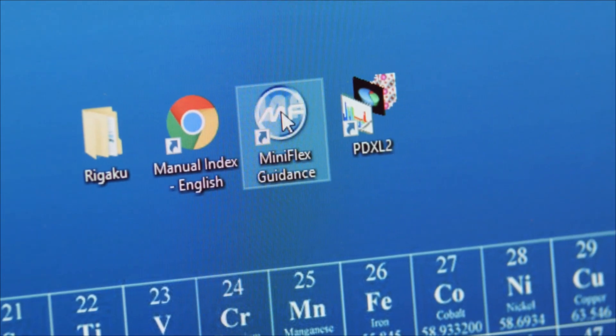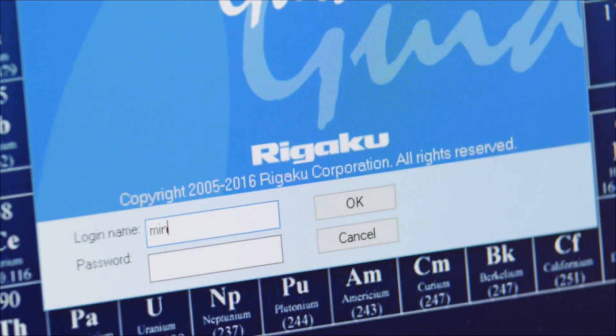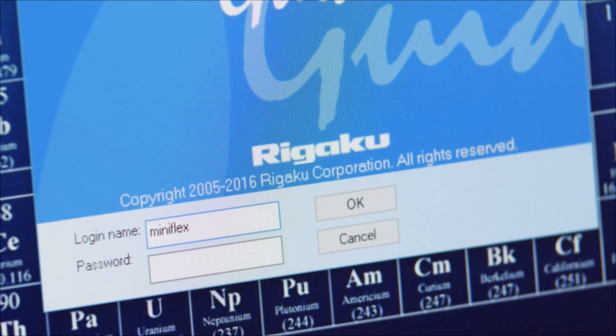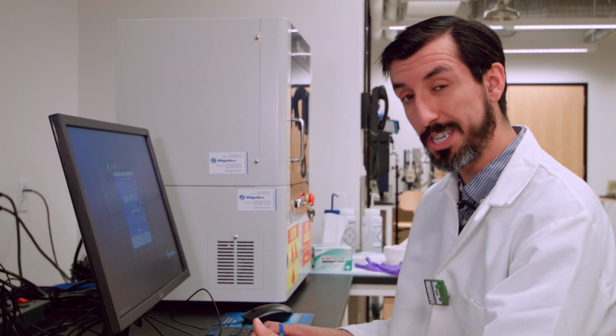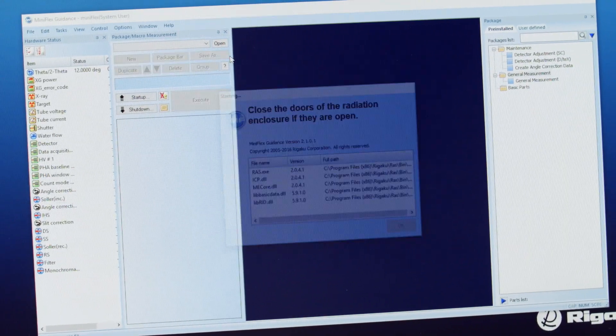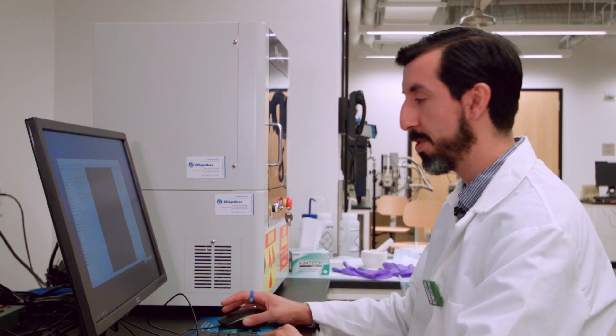Double-click the MiniFlex icon on the desktop. On the login screen, type in MiniFlex for the user name. There is no password. Once the screen looks like this, the computer can now control the instrument.